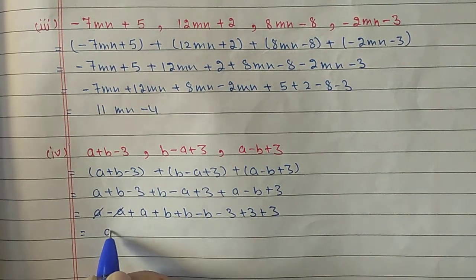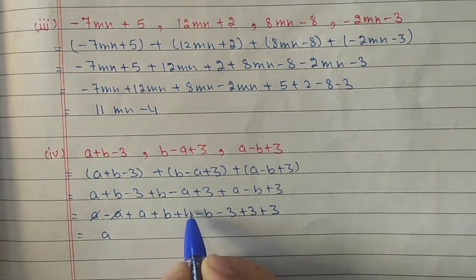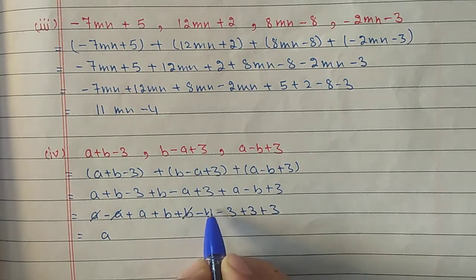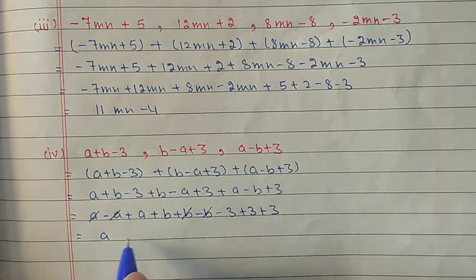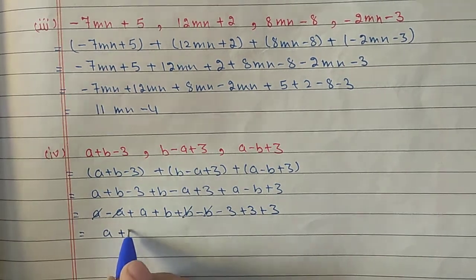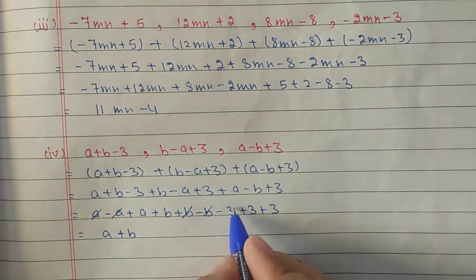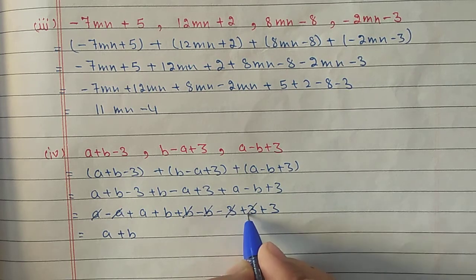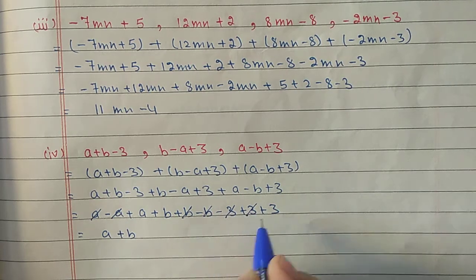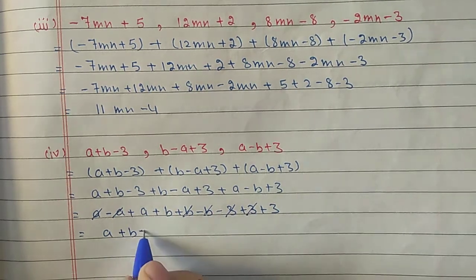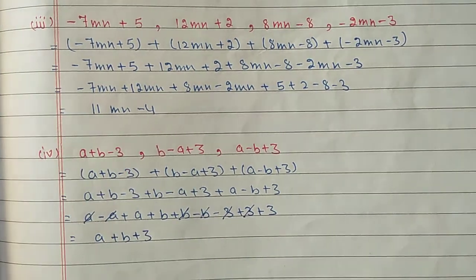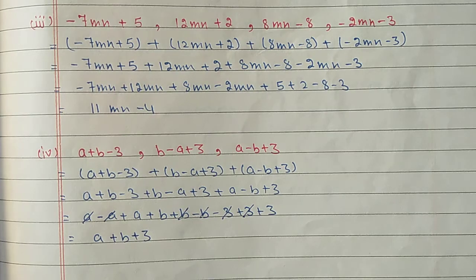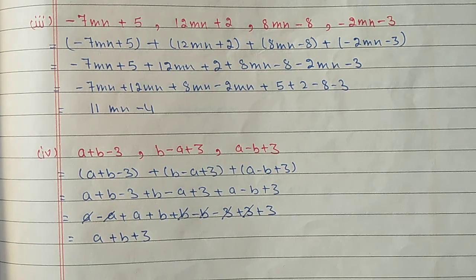Simplifying: a minus a gives 0 so a remains; b minus b cancels out so b remains; and constants give plus 3. Answer: a plus b plus 3.